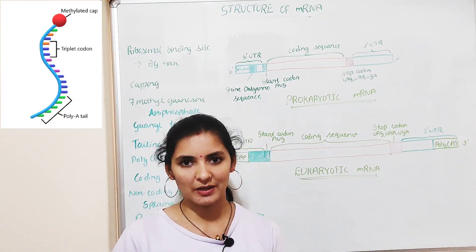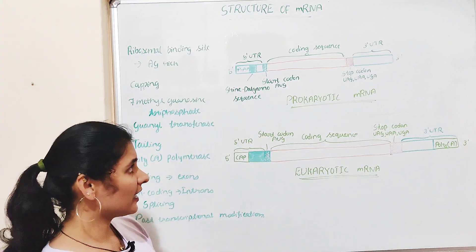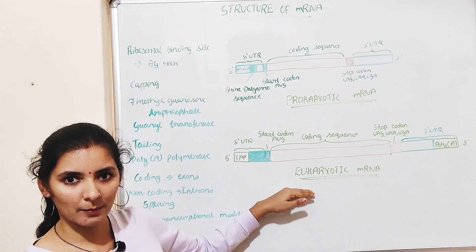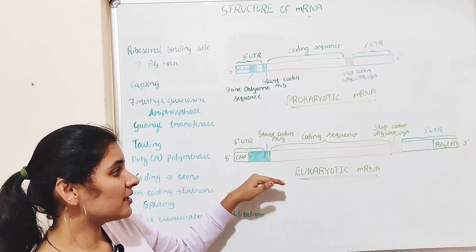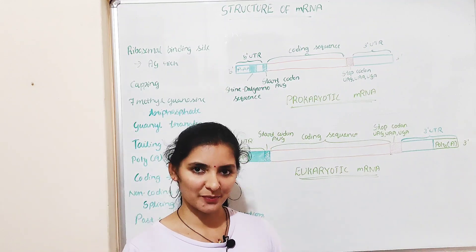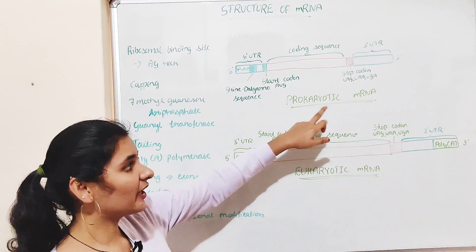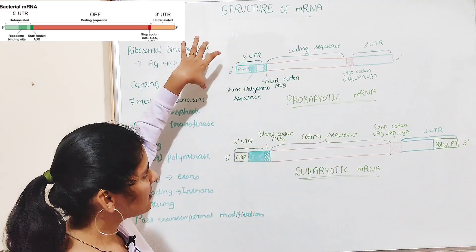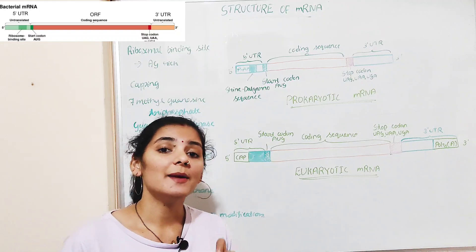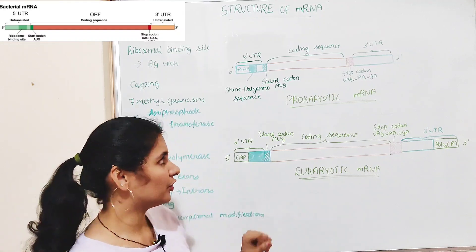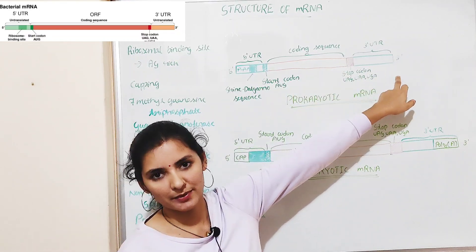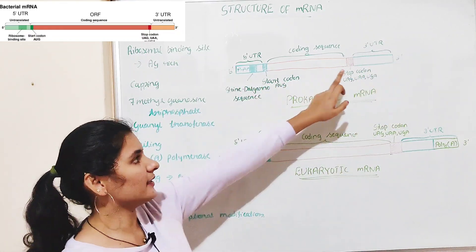Apart from having codons, mRNA has several other parts. As you can see in this diagram, this is a prokaryotic mRNA and this is a eukaryotic mRNA. There is a slight difference in the structure of prokaryotic and eukaryotic mRNA, so I'll discuss them separately. mRNA is a single-stranded molecule with two ends: the 5' end and the 3' end.